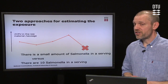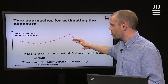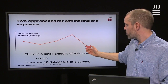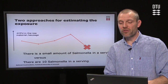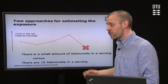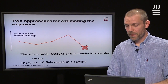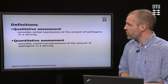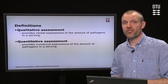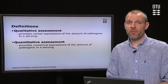There are two approaches to estimate exposure. We can express the amount of exposure either in words, saying that there is a small amount of salmonella in the serving — that is a qualitative assessment, providing verbal expressions of the amount of pathogens in the serving. Or we can express it in numbers, saying there are 10 salmonella in the serving — that is a quantitative assessment, providing numerical expression of the amount of pathogens in the serving. There is quite a big difference between these two statements.